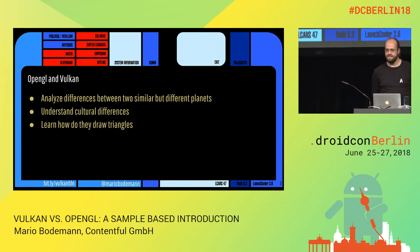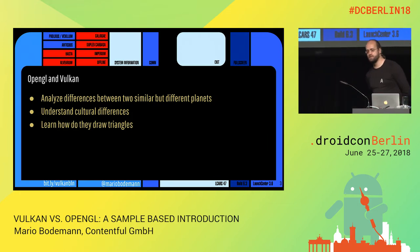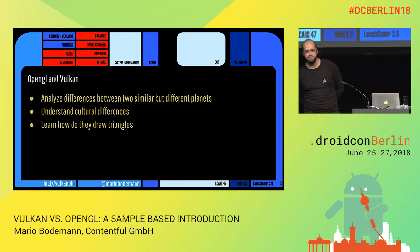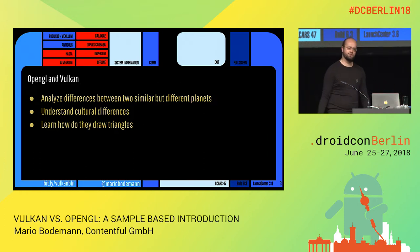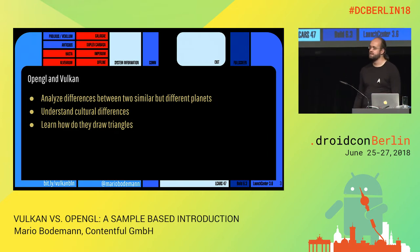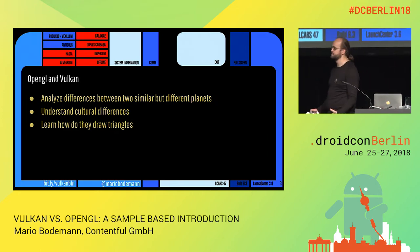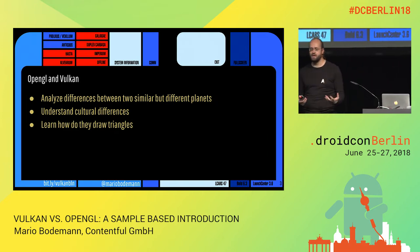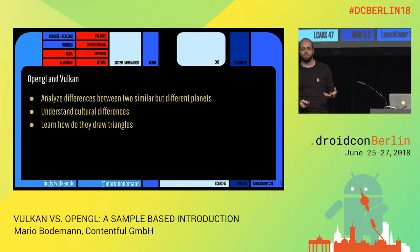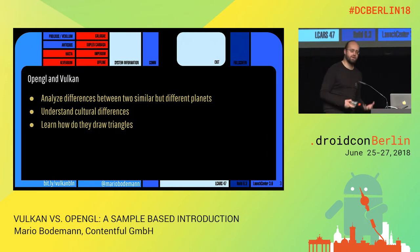So let's see what are the differences between the Ogillians and the Vulcans. And specifically, let's find out how do they actually draw triangles? Because this is for us the difference. How do we characterize different species? Obviously, by the way they draw triangles.